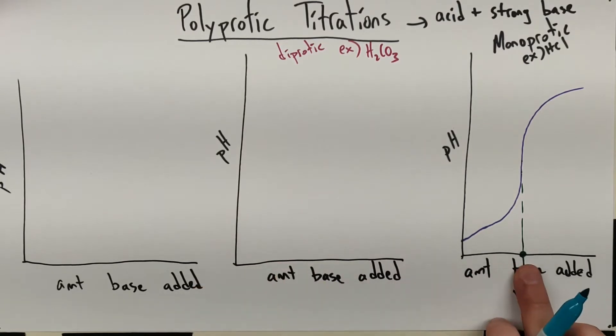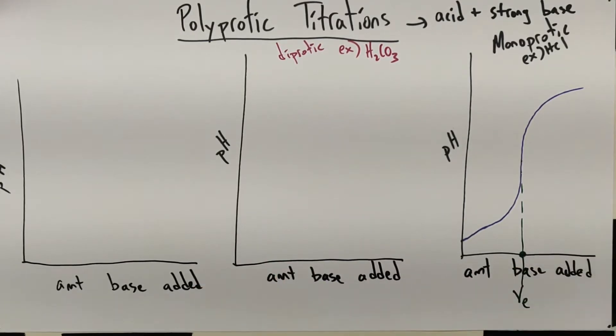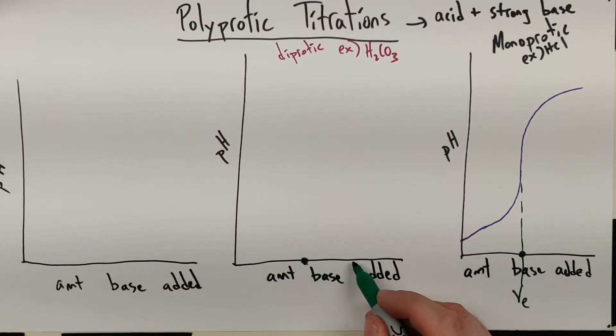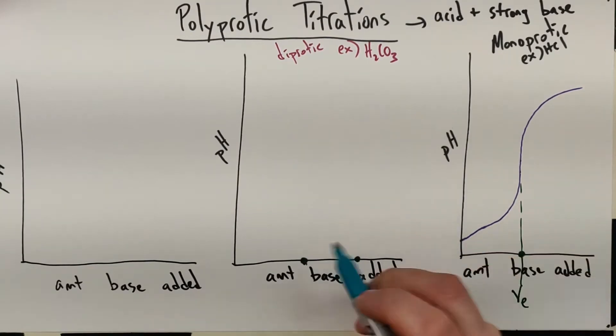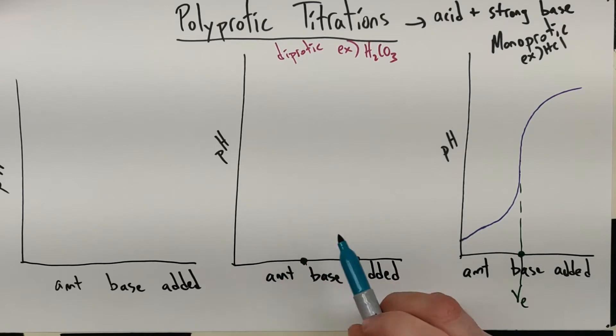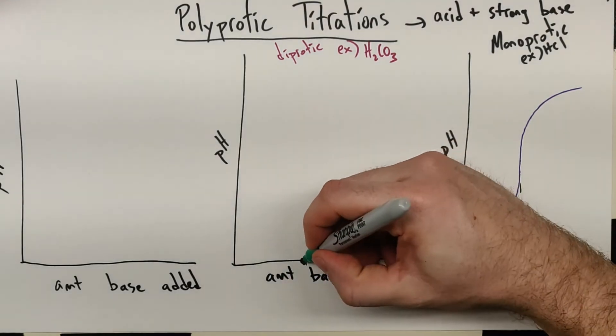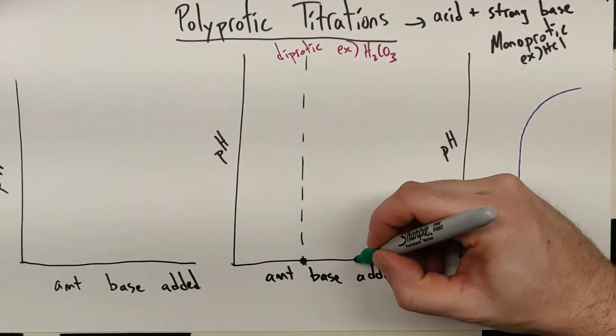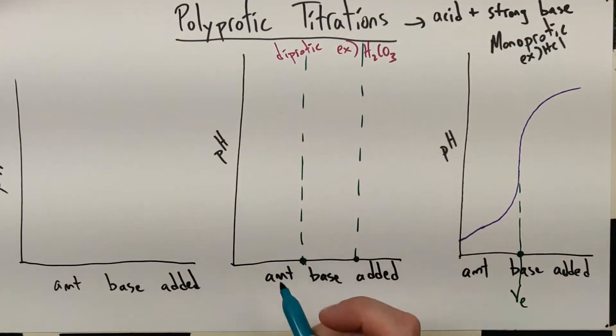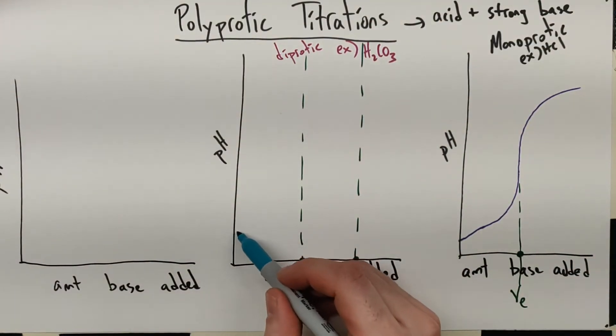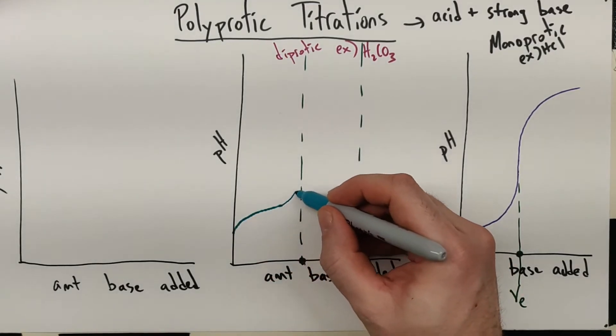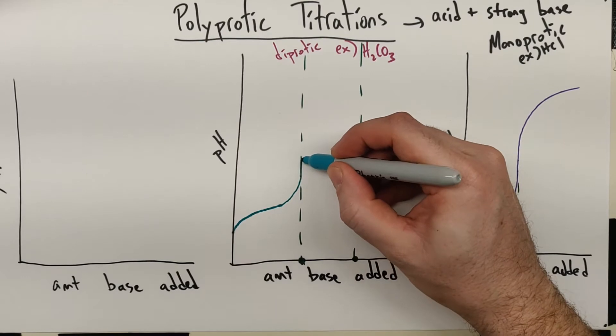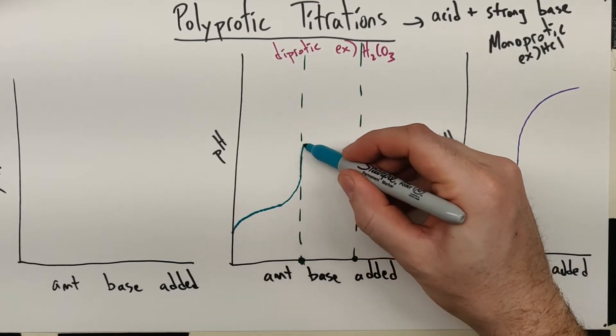And I kind of want to match that up to that distance right there. So if we look, that was about that far away. And then, unsurprisingly, we're going to have that right there. And this may not be the world's greatest picture, but here we go. We're going to start out with our buffer region as that first H gets pulled off. And then it's going to jump up through our equivalence point for that first H. And then it's going to start to plateau.